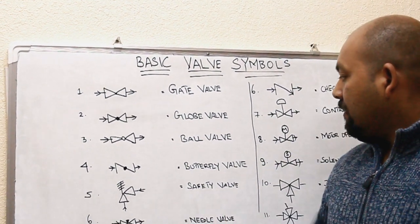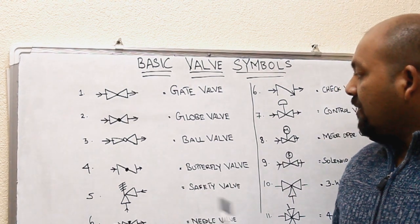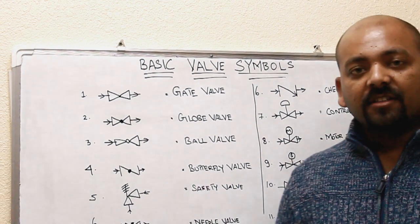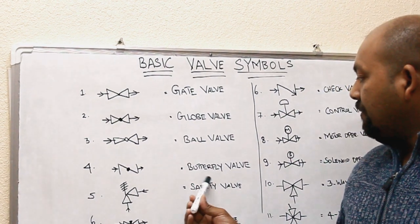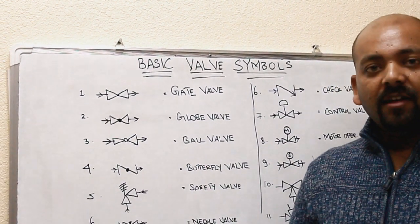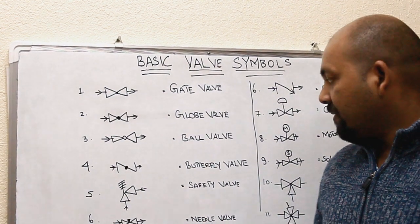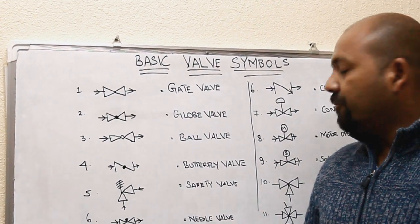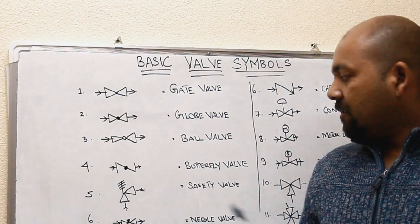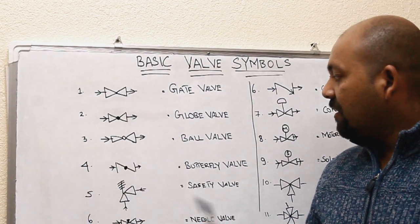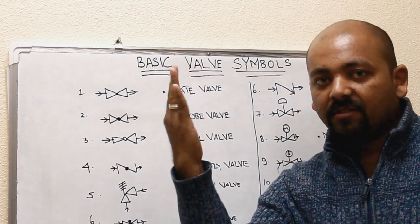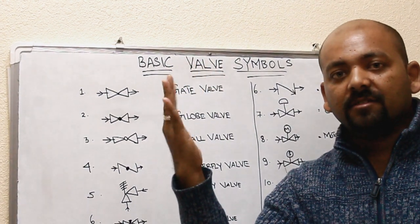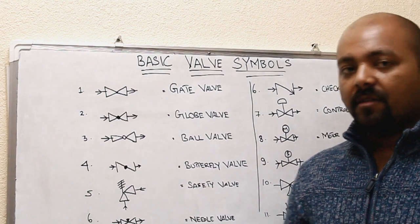Butterfly valve. The butterfly valve and the ball valve have similar functions or applications, but butterfly valve is a little bit cheaper than the ball valve and can be used for low pressure lines. So butterfly valve, this is the symbol. It is operated by a disc. It will open like this, close like this, open-close similar to the ball valve functions: open, close, as well as regulate.